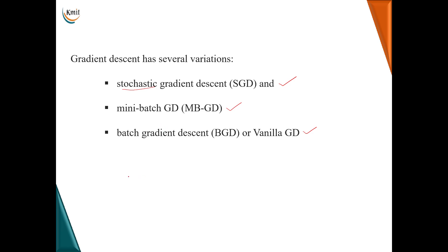Let's have a quick review of the previous session about gradient descent. The same steps are followed by all three variants — the only difference is how many training examples are used to update the weights. We select a random value of weight, calculate the slope to find the direction, and calculate the next step size, moving towards the local minima where the loss function is minimum.